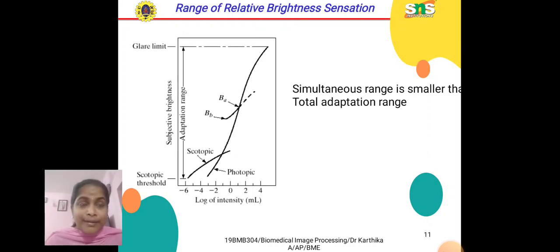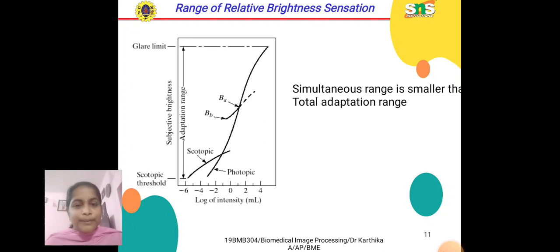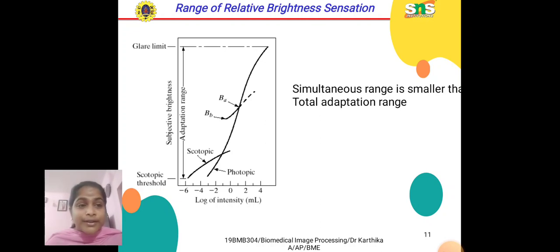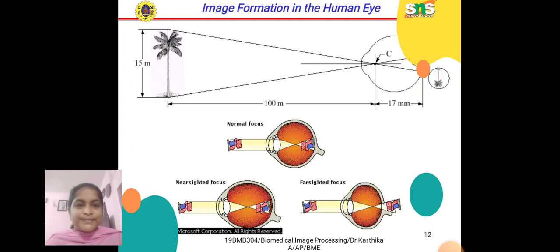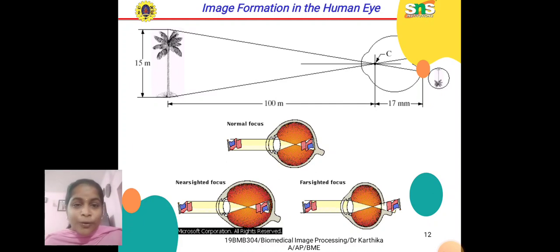Rods and cones are responsible for bright light and dim light vision — that is photopic and scotopic vision. The x-axis represents the log of intensities, and the y-axis represents subjective brightness. We have a glare limit and a scotopic threshold. The simultaneous range is smaller than the total adaptation range, with small scotopic and large photopic vision represented by BA and BB. In image formation in the human eye, we have normal focus, nearsighted focus, and farsighted focus. The distance between the image and the human eye is 100 meters, the focal length is 17 millimeters, and the object length is 15 meters.